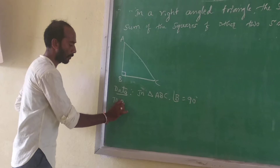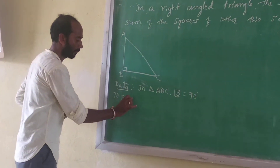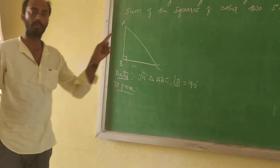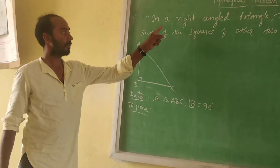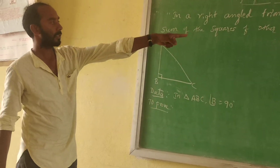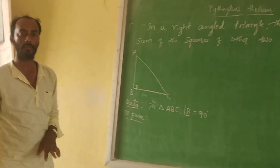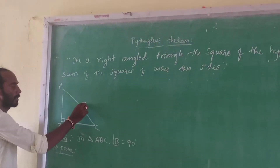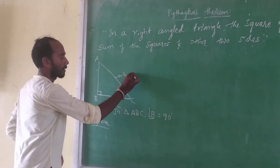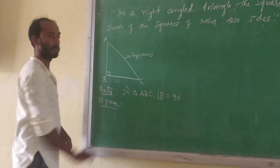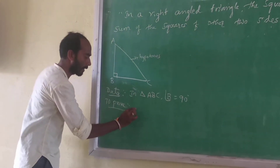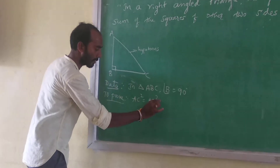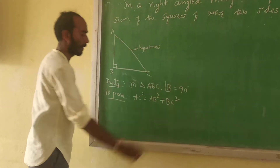To prove: the square of the hypotenuse is equal to the sum of the squares of the other two sides. The hypotenuse is equal to AC. So we prove that AC² = AB² + BC².